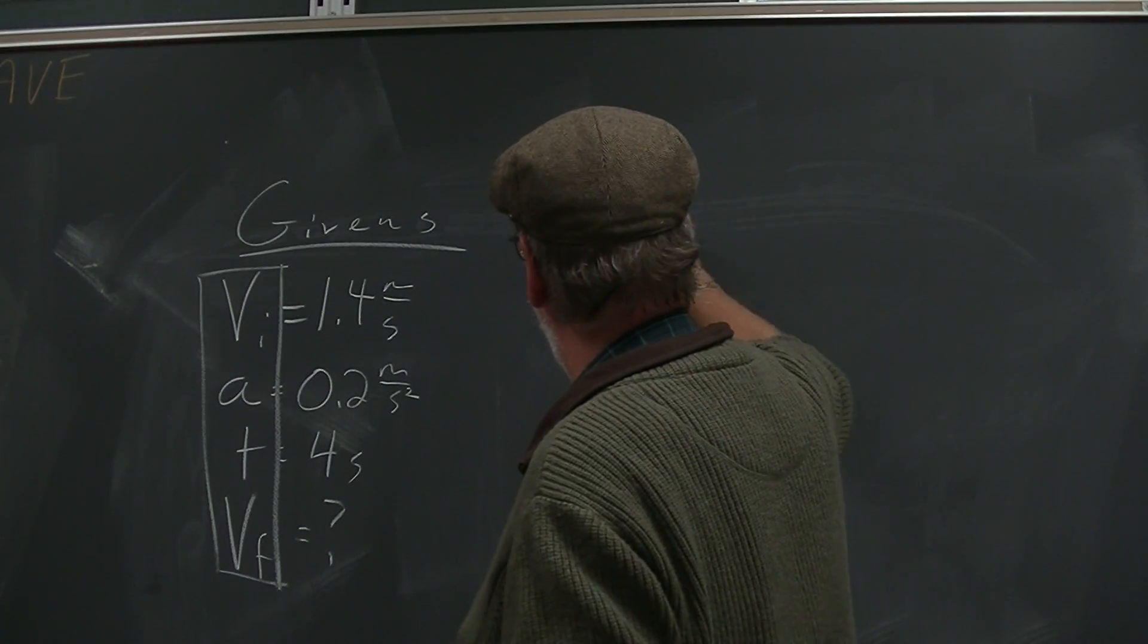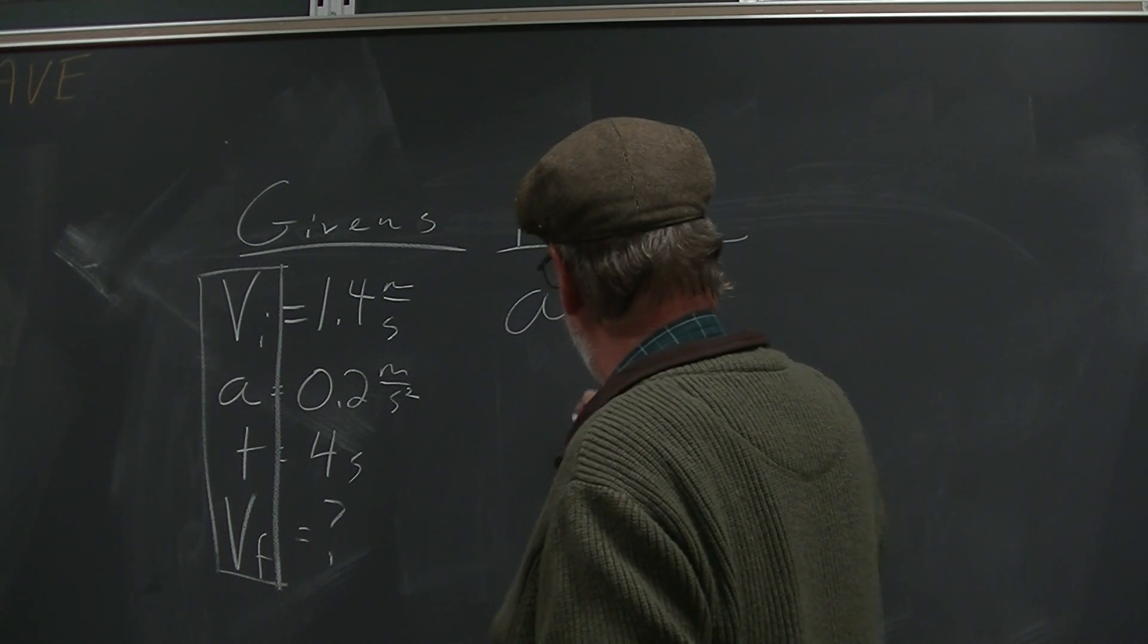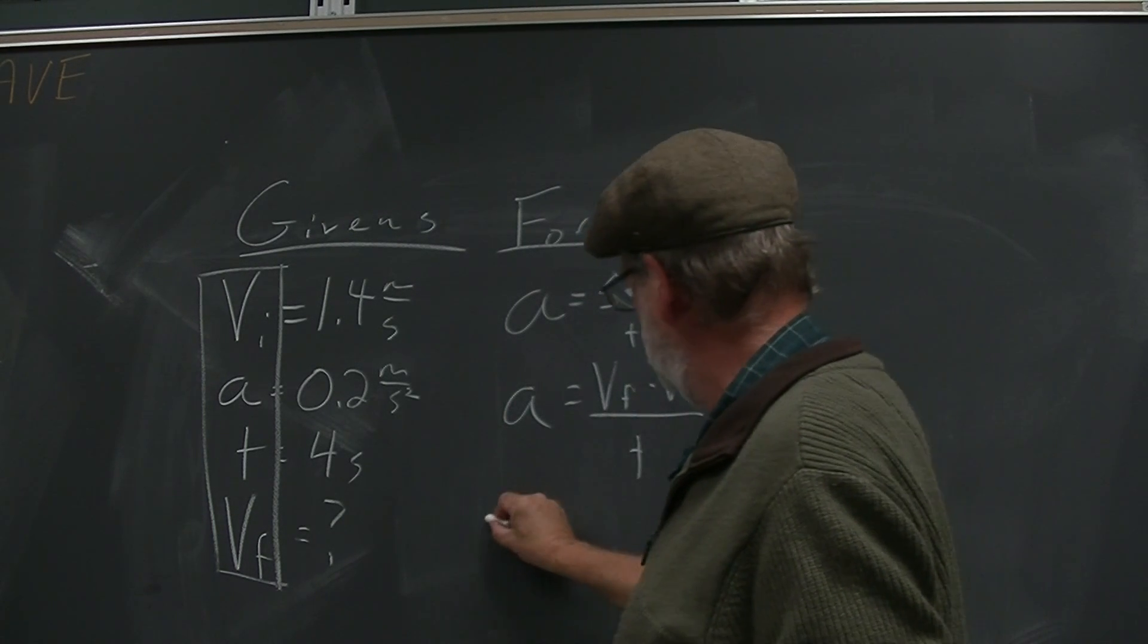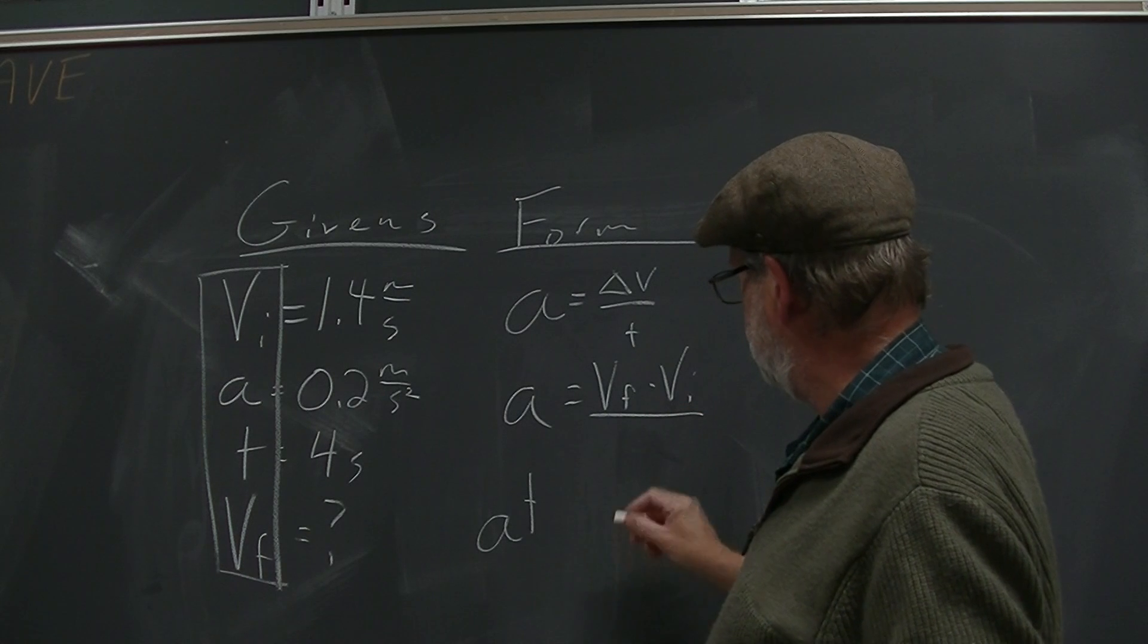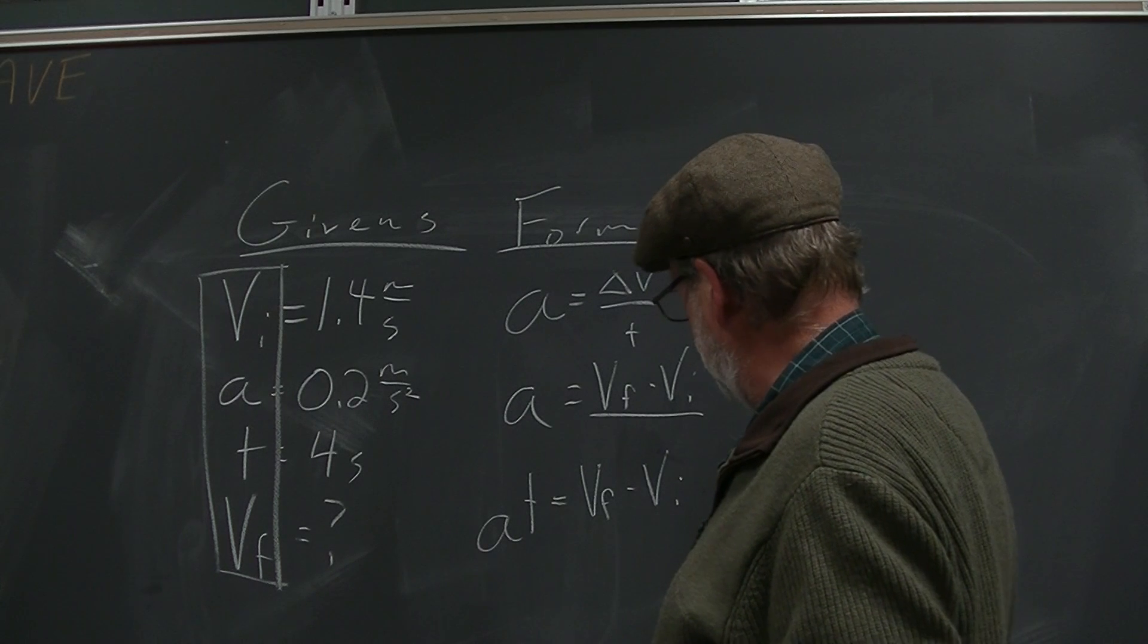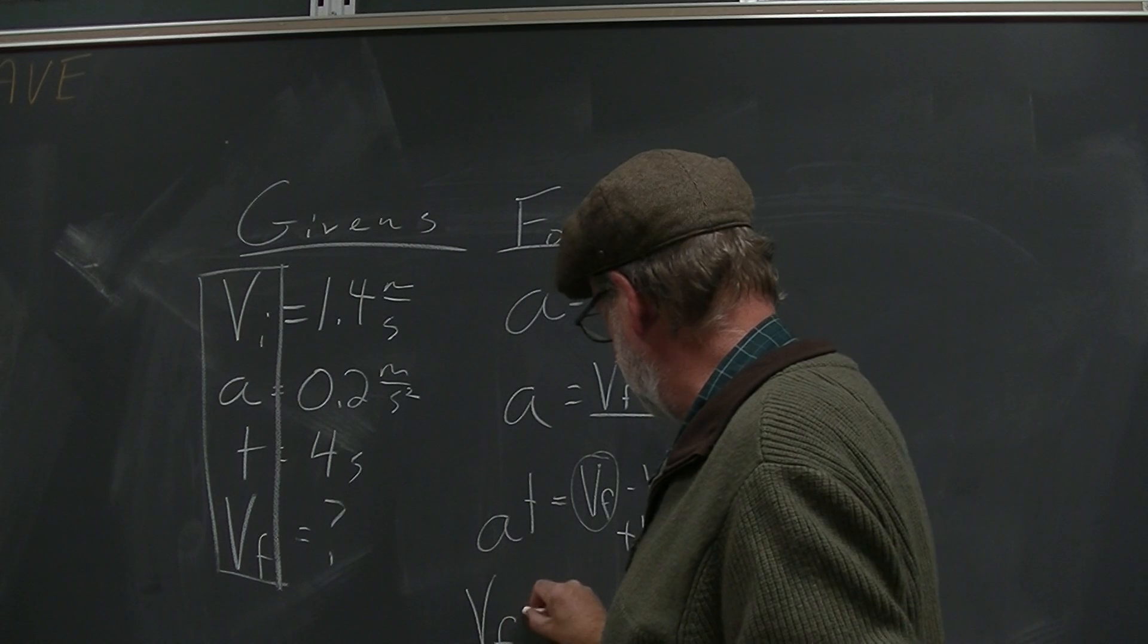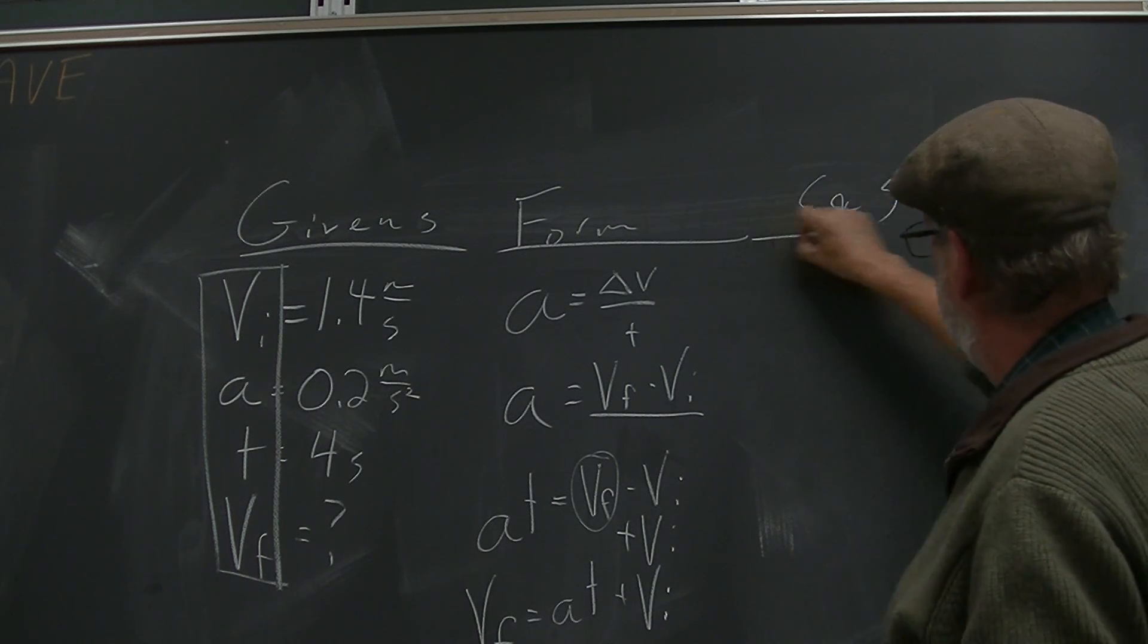If I take acceleration as change in velocity over time, that expands to VF minus VI over T. Now I can mess around. I'm looking to get VF by itself. I multiply both sides by T, so the T drops out here. AT equals VF minus VI. What can I do with that? If I'm looking for final velocity, how about I add VI to both sides, so now I would have final velocity equals AT plus VI. How handy.